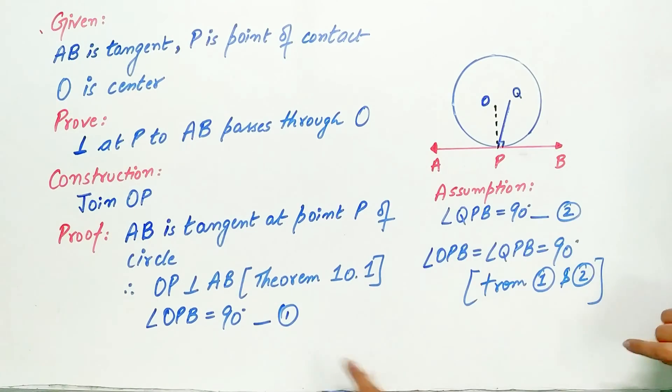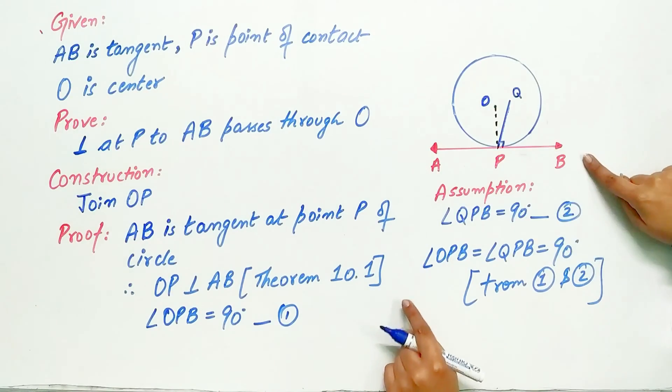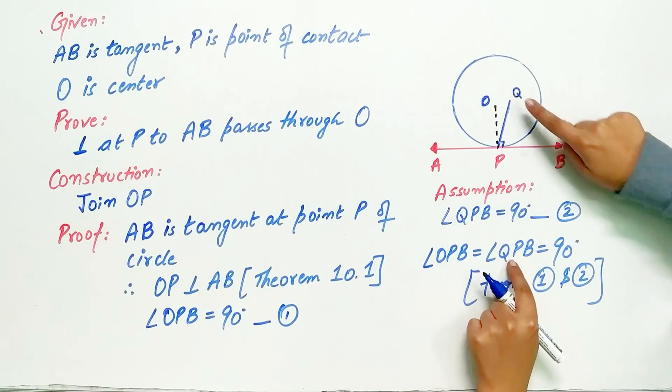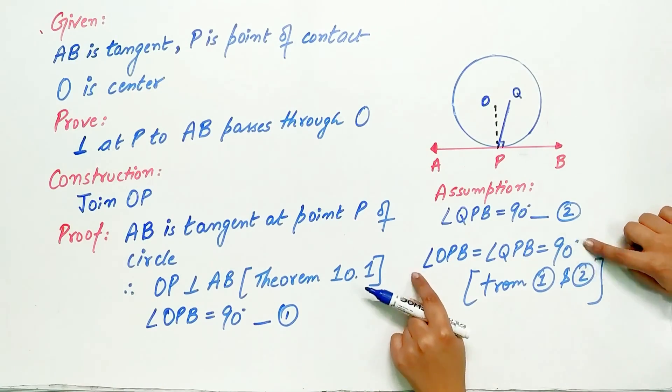From first and second, can I say angle OPB is equal to angle QPB? That is 90 degrees. Now think, is this possible?